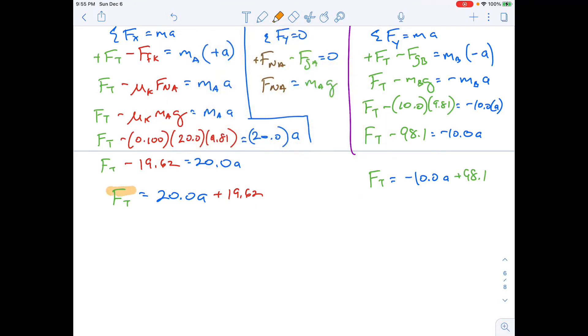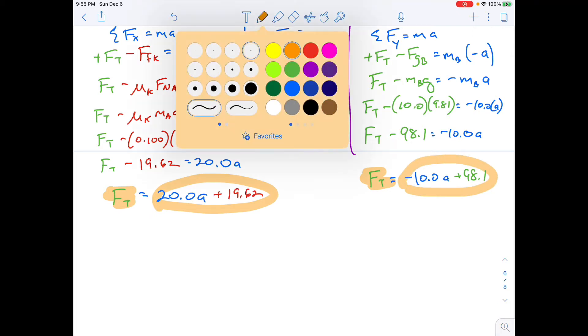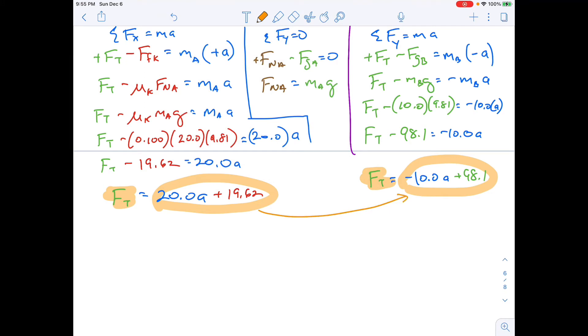And on this equation over here, I'm going to say FT equals negative 10.0 A plus 98.1. And then I'm going to do the whole math thing where A equals B, B equals C kind of thing. I'm going to take the two FTs, since FT equals FT, I'm going to take this, and I'm going to set it equal to this because they're equal because they're both equal to FT.